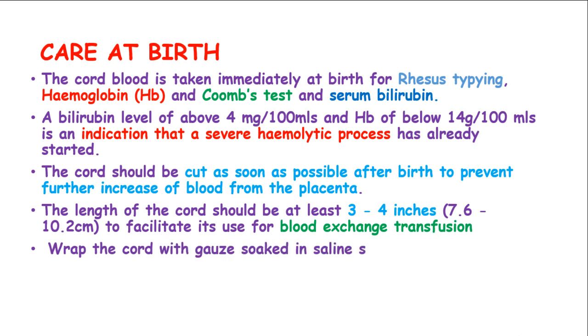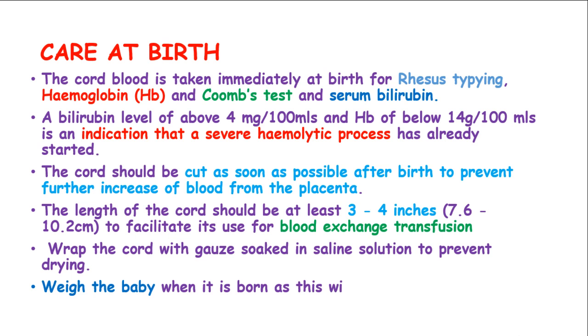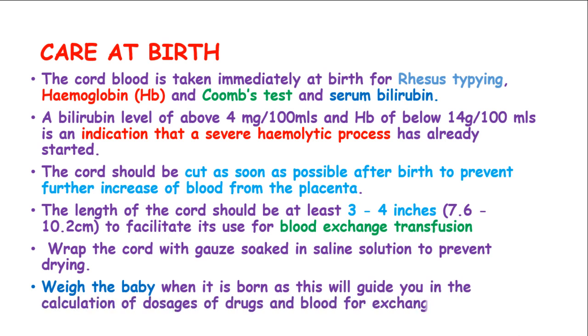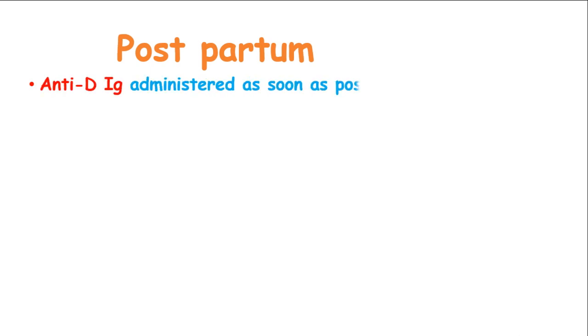The length of the cord should be at least 3 to 4 inches to facilitate use for blood exchange transfusion. Then wrap the cord with a gauze soaked in normal saline solution to prevent it from drying. Weigh the baby, as it will guide you in calculating the dosages of drugs and blood for exchange transfusion. Postpartum care involves the administration of anti-D immunoglobulin 72 hours after delivery.